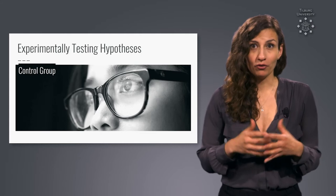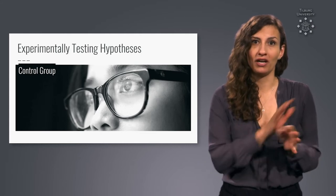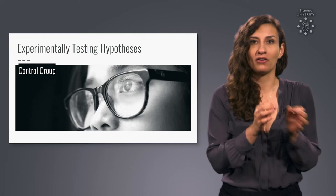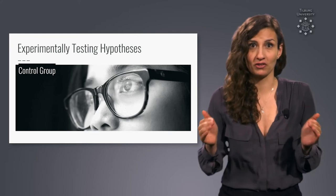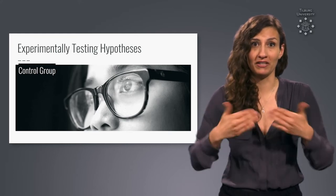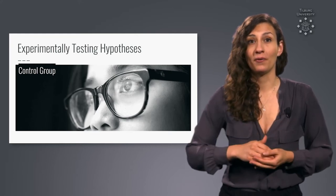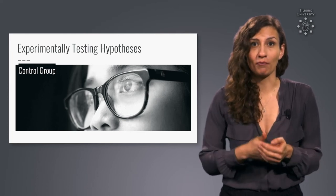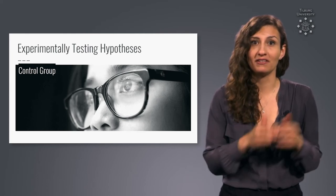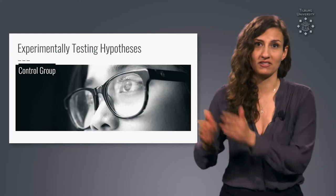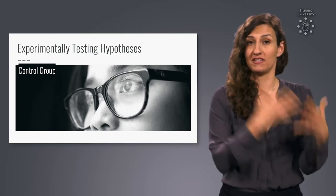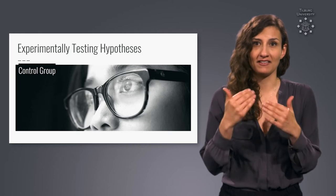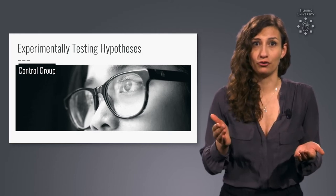A control group is the second group of participants or other subjects in our experiment, which we observe under conditions that do not differ from those in the experimental group one bit. In our study, we would measure the eyesight of the experimental and control group at the same moments, ask the people the same questions, and treat them the exact same way in every other regard.